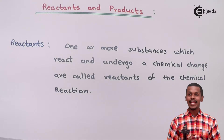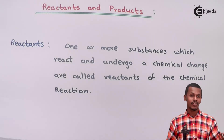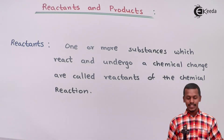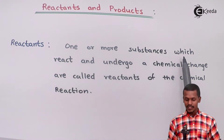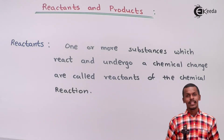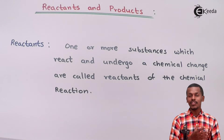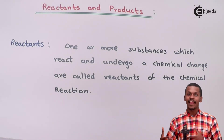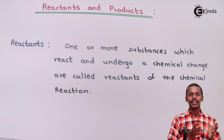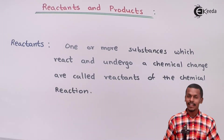Let us understand what a reactant is and what a product is. When one or more substances react and undergo a chemical change, they are called reactants of the chemical reaction. Those substances that interact with each other so as to form a new kind of product are basically known as reactants.